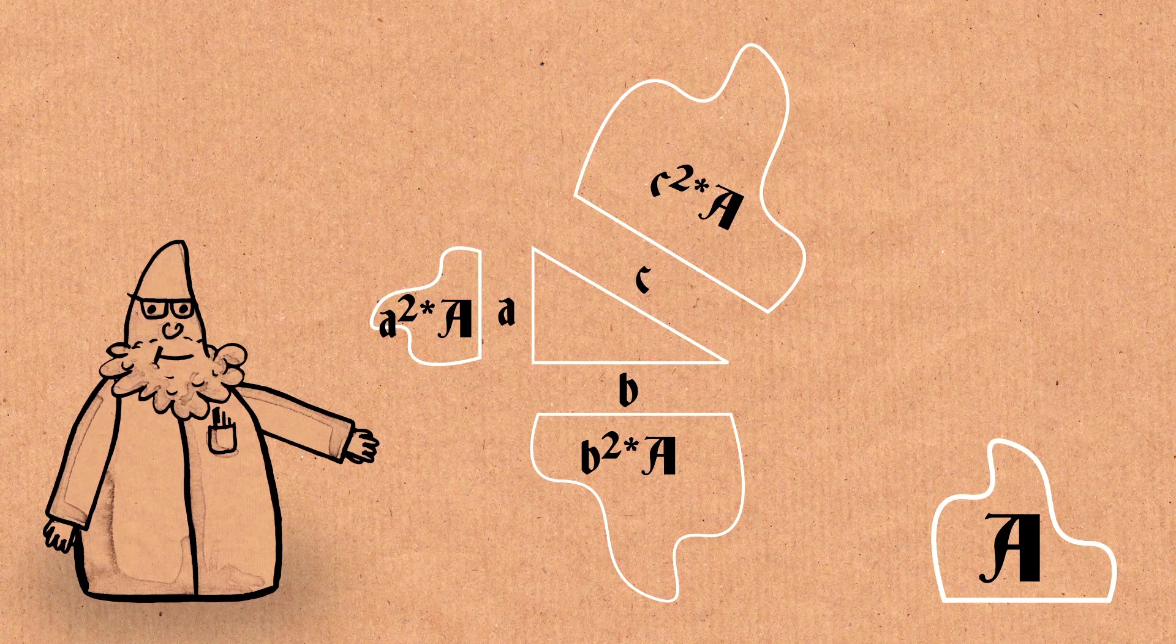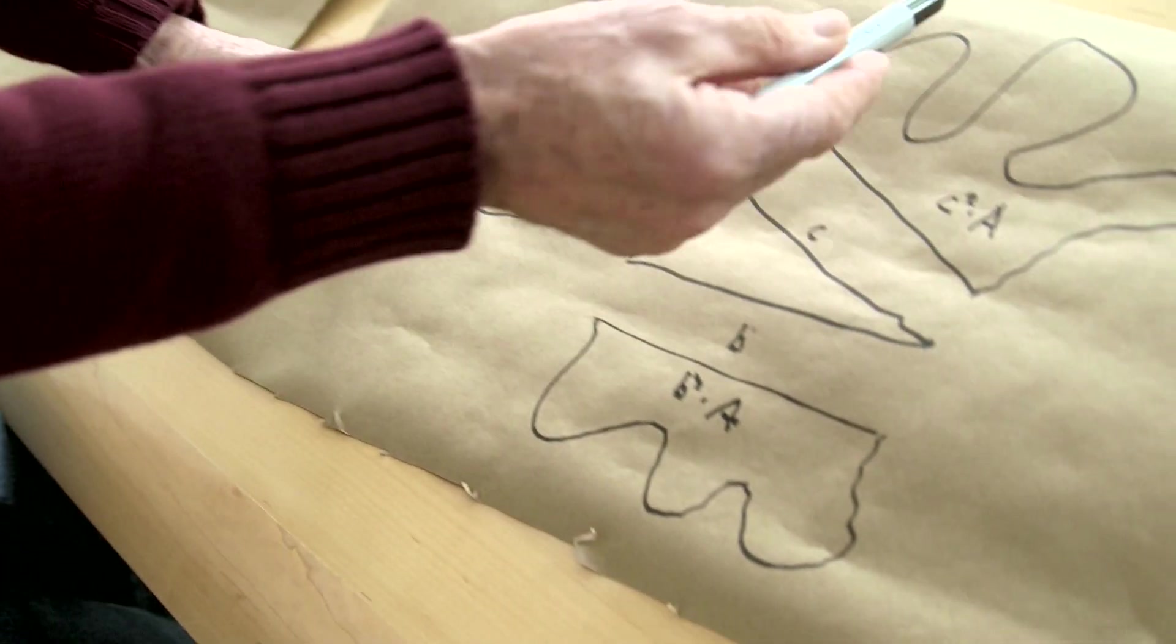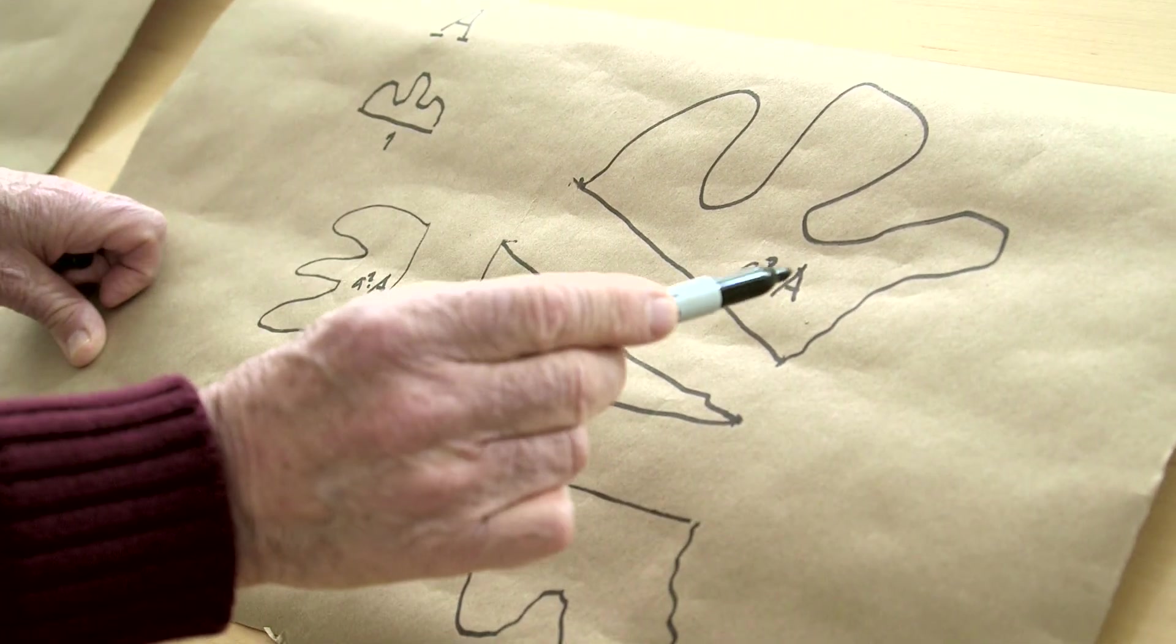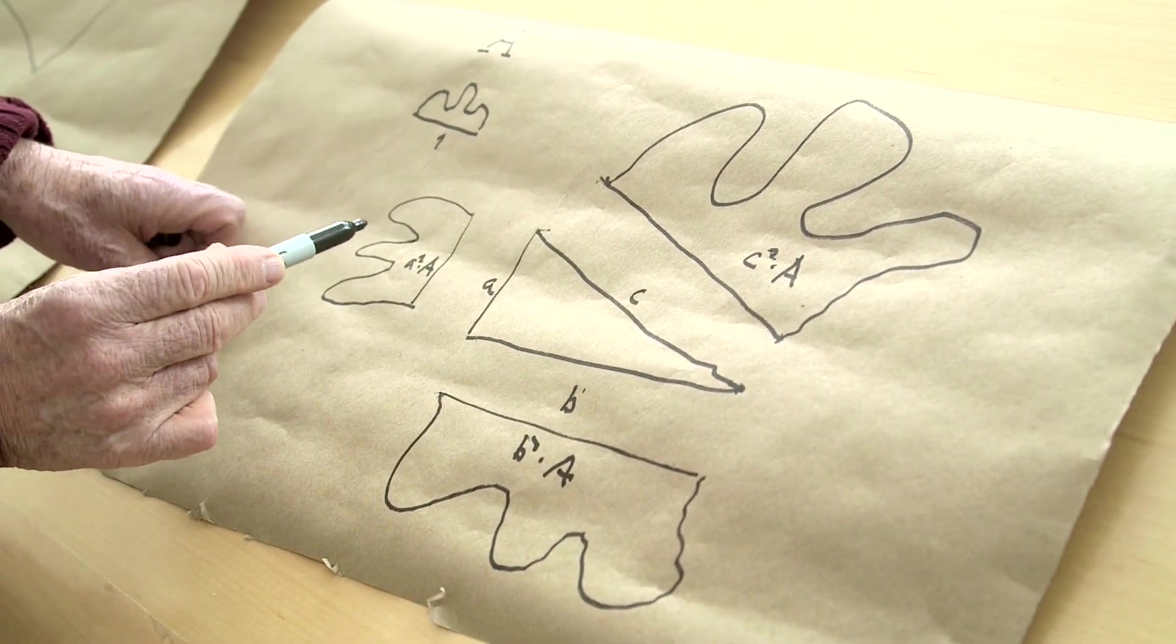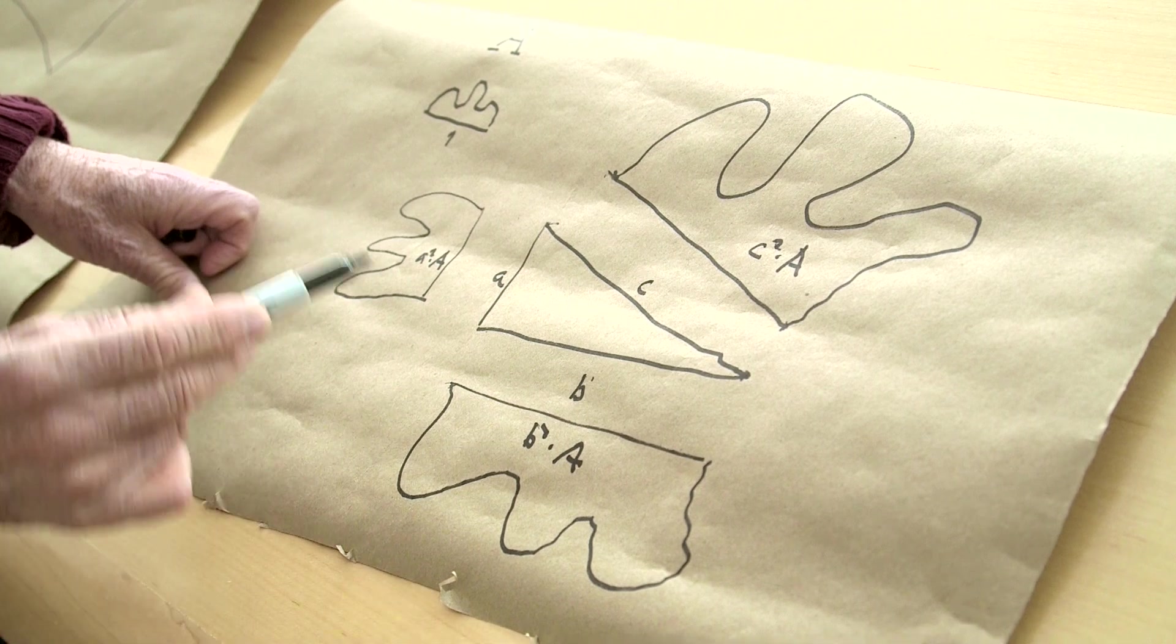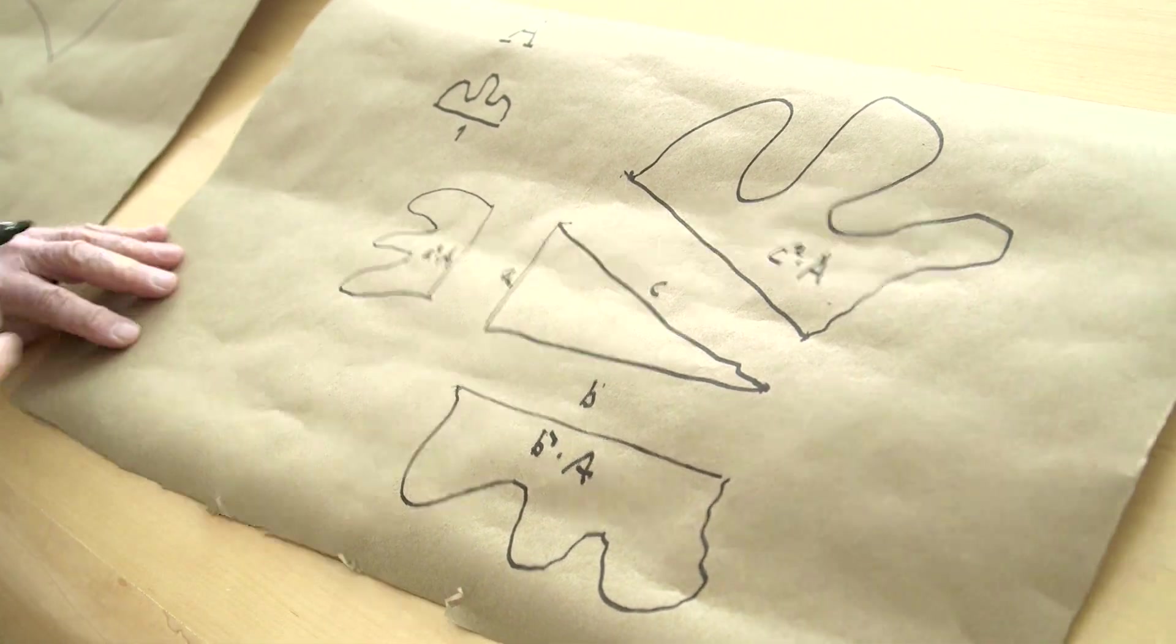So, if I prove to you that for some blob with some area A, this large blob is the sum in area of the areas of these two small ones, what I will have shown is